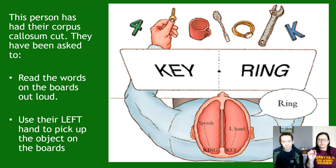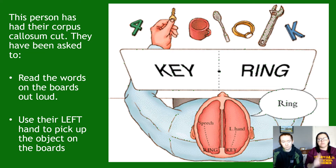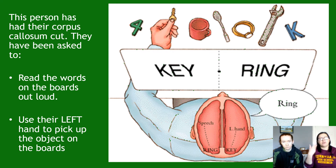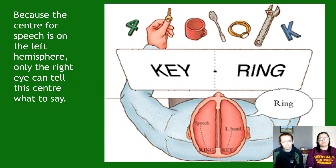There are key facts to remember: speech is located in the left cerebral hemisphere, and the left hand is controlled by the right cerebral hemisphere. Crucially, your left eye conveys information to the right cerebral hemisphere, and your right eye conveys information to the left cerebral hemisphere.